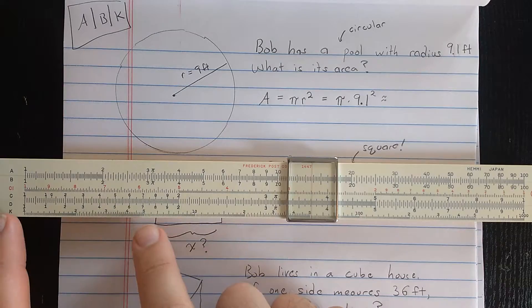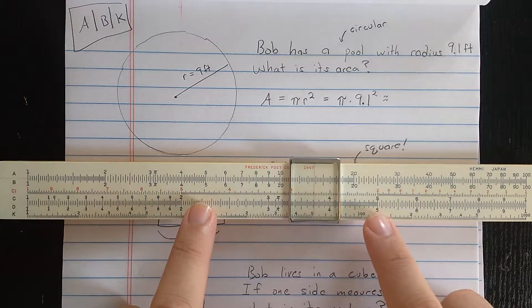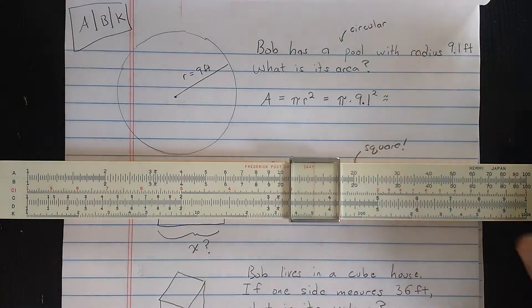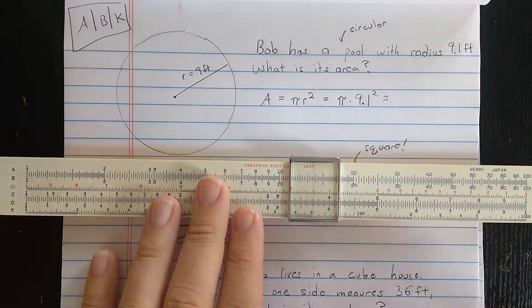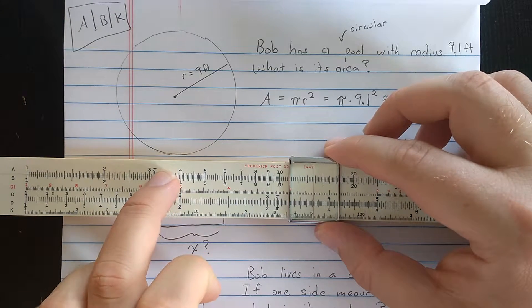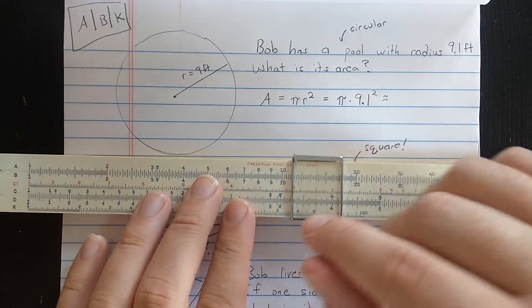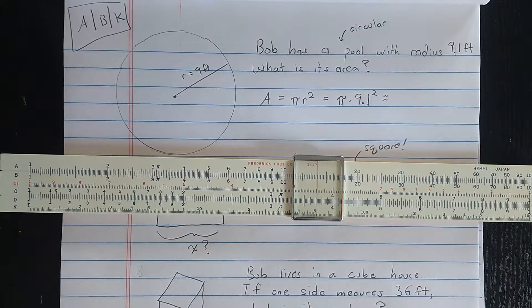The K scale actually is the same thing except repeated three times. It goes 1 to 10, 10 to 100, 100 to 1,000. The A scale with respect to the D scale represents the square of the number on the D scale, and the K scale with respect to the D scale represents the cube. So A or B for squares and K for cubes.